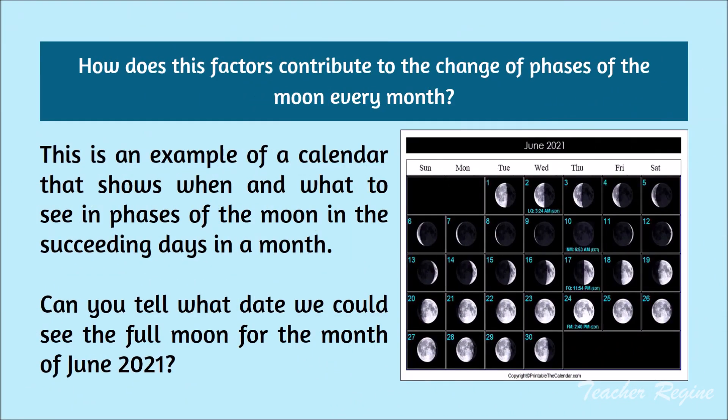This is an example of a calendar that shows when and what to see in the phases of the moon in the succeeding days in a month. Can you tell what date we could see the full moon for the month of June 2021?